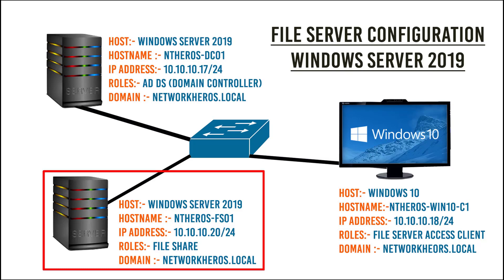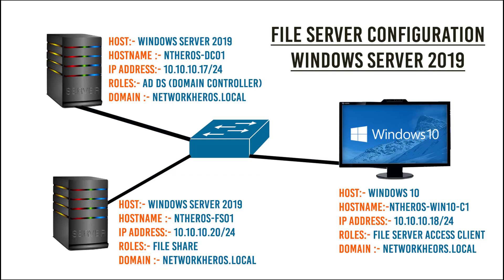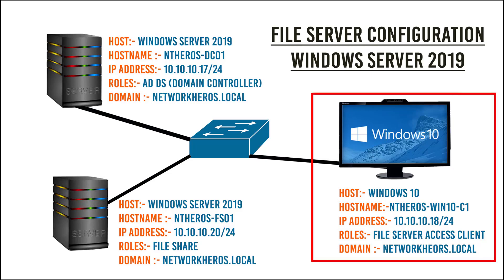This machine is a fresh machine — nothing is installed and nothing is configured on this server. I will configure file sharing in this Windows Server 2019 from scratch and verify the shared file access from the Windows 10 host, which has the host name antiheroes-win10-c01 with the IP address 10.10.10.18/24. The role of this machine is to access files shared by the file server. The Windows 10 machine will also be a member of the domain networkheroes.local, because only domain users are going to get access to the files shared by the file server.